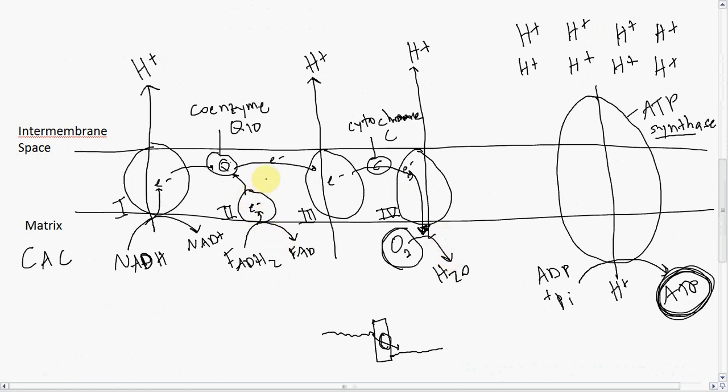As all those electron transfers take place, the energy is harnessed to pump H+ from the matrix to the intermembrane space, creating a high concentration of H+ on that side. ATP synthase then uses this in a controlled way to harness the energy and make ATP.